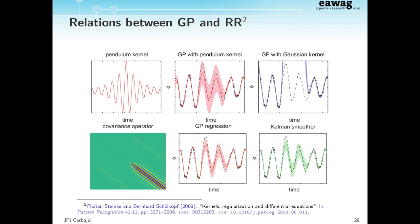They show: if you use what many people believe is the default Gaussian process — the squared-exponential covariance — the first choice of many practitioners leads to being super confident about something completely wrong. But if you compare with a Kalman smoother, you get exactly the same solution down to machine precision. These two methods are predicting the same thing. Maybe there's a link there.